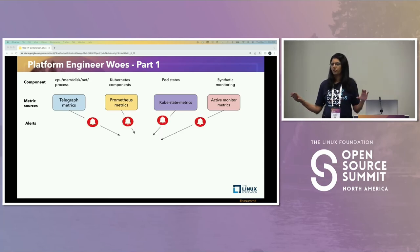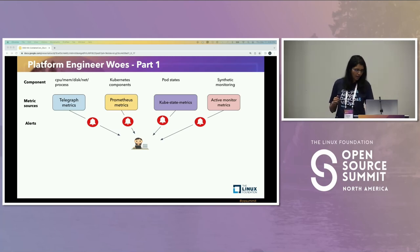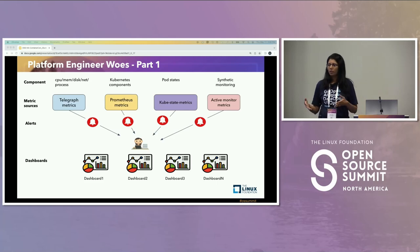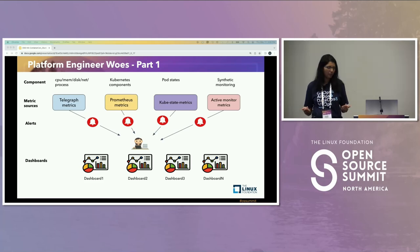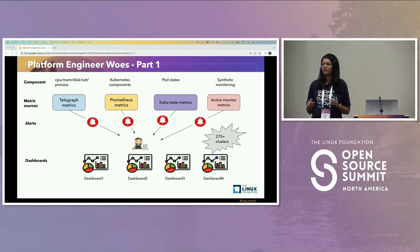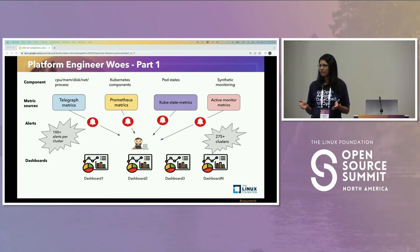All of these metrics are generating alerts, and they go to our platform engineer — typically the platform engineer on-call. They're frantically looking at a bunch of dashboards, trying to do some runbook lookups, and then trying to mitigate the problem, reducing the MTTD and MTTR of whatever issue is at hand. Note that they have to do this for 275-plus clusters, with about 100-plus alerts per cluster. It's pretty overwhelming for our platform engineer to be on-call.